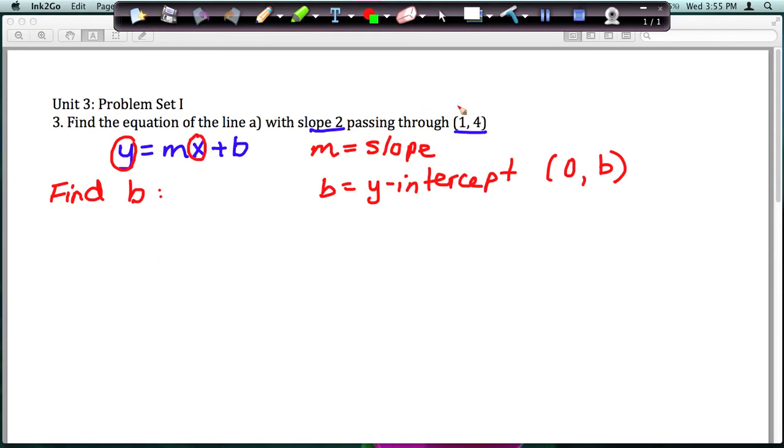So remember for your point, the first number is x, and the second number is y. And I need to plug in the slope that we have. And once I do that, I can solve for b. So let's go ahead and do that.